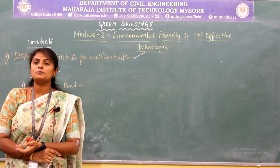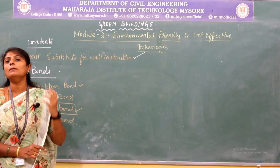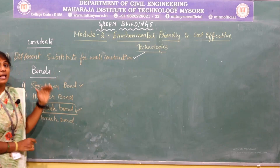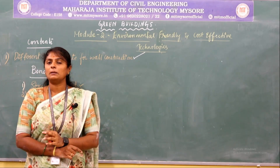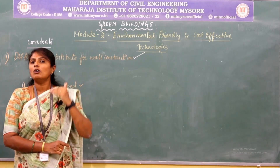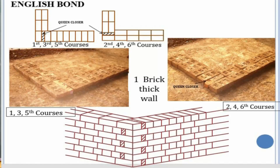In the stretcher bond, all the bricks were laid along their stretcher face; in the header bond, all were laid along their header face. But in the English bond, bricks are laid both in stretcher and header. The alternate layers of the masonry structure will have a stretcher course and a header course. As the figure represents, English bond consists of alternate layers of stretchers and headers. Queen closers are placed at either the starting or end of the course to break the vertical joints.